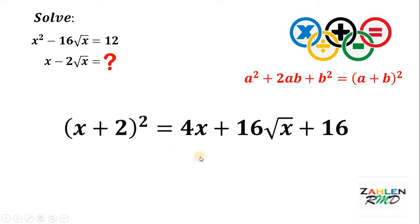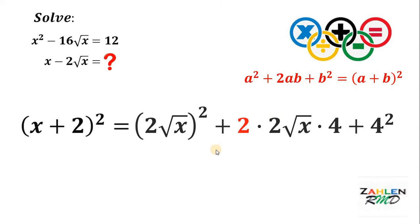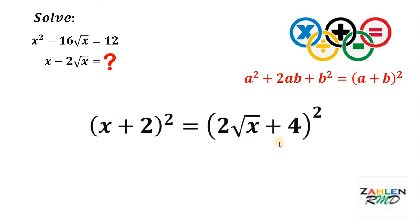Now, how about on the right side? It is in the form of a squared plus 2 times ab plus b squared. It directly follows that it can be factored as 2 times square root of x plus 4, quantity squared.